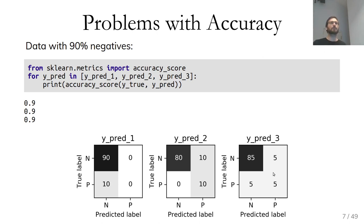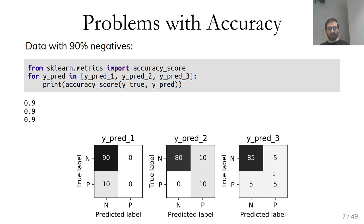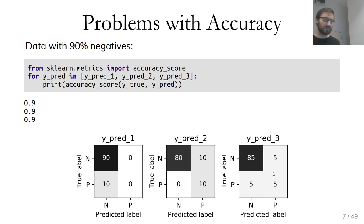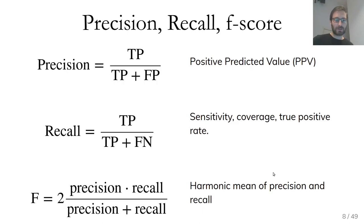One way to work around this is to always look at the confusion matrix. However, if we want to compare many models or do automatic comparisons like grid search, we need to boil them down to a single number. There are a couple of metrics derived from the 2×2 confusion matrix. Arguably the most common ones are precision, recall, and F-score.